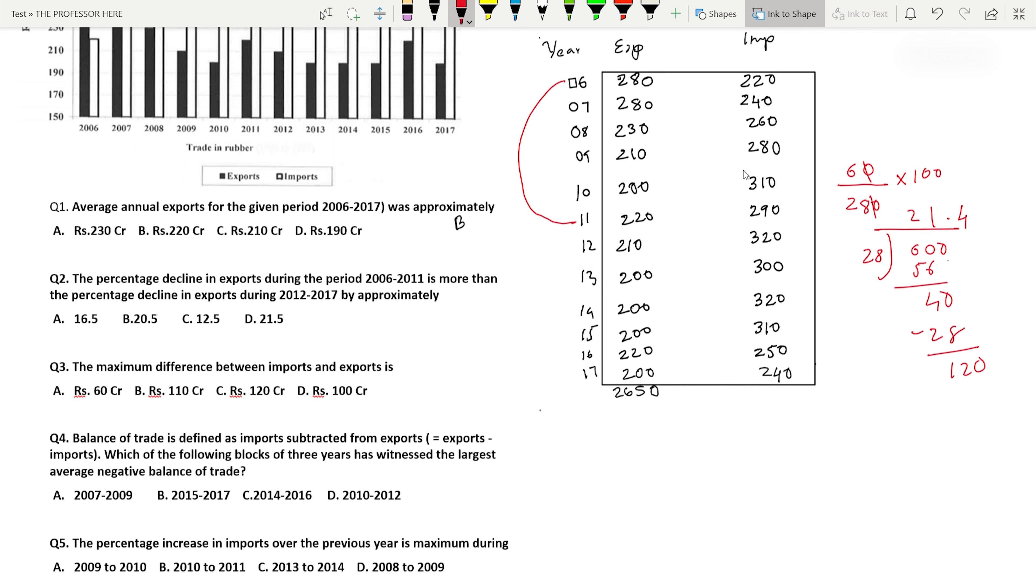The second part asks for the percentage decline during 2012 to 2017. In 2012 it was 210, it declines to 200, so there's a difference of 10 divided by 210 into 100. That becomes 1000 divided by 21, which equals 4.7 percent. Now we have to find the difference in percentage decline between 2006-2011 and 2012-2017, so 21.4 minus 4.7 equals 16.7. The nearest answer is option A, 16.5, so option A is the answer.